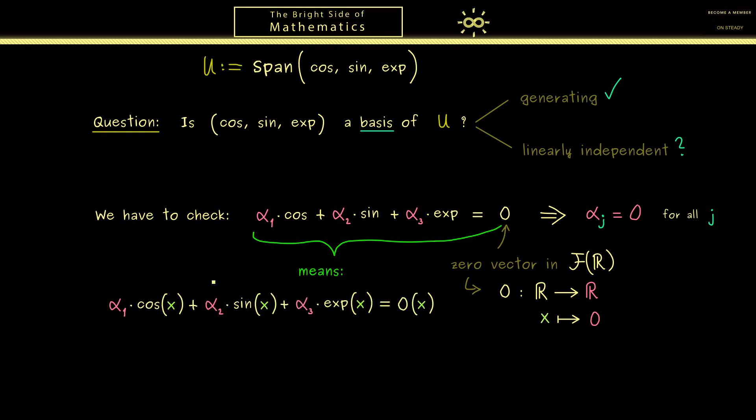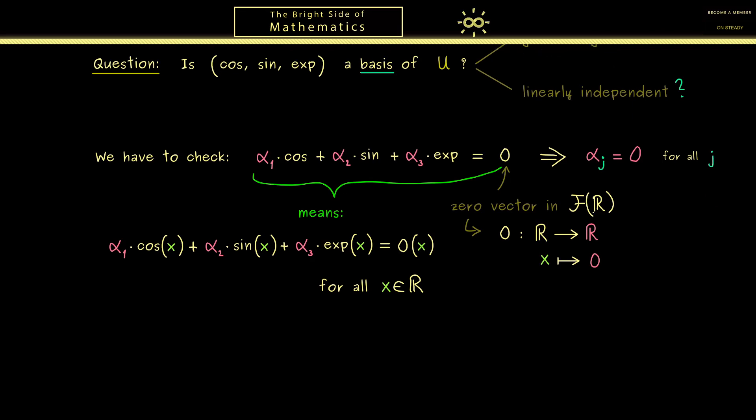So you see, we simply put x into all the functions and then we say that we have this equation for all x in R. And this is the crucial part to recognize, because it means that you can also restrict yourself to some special chosen x. And this is exactly what we will now do.